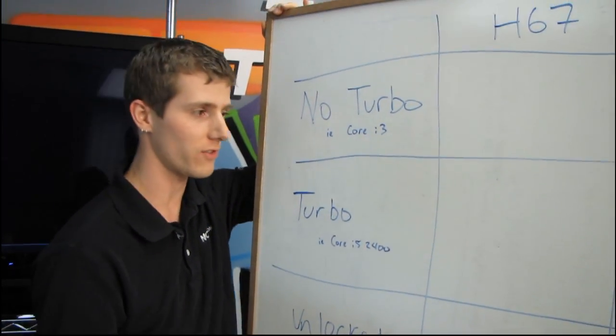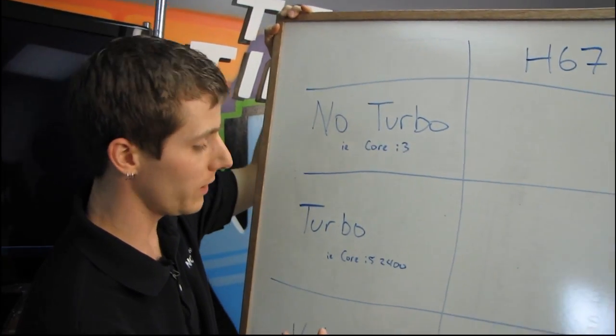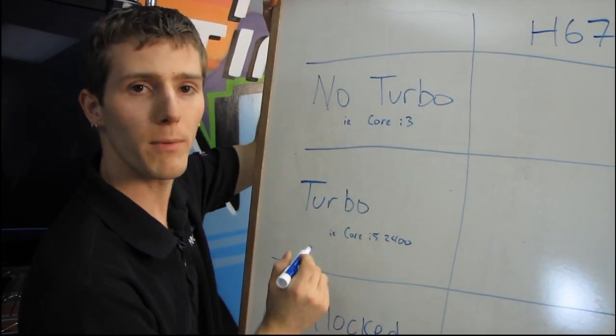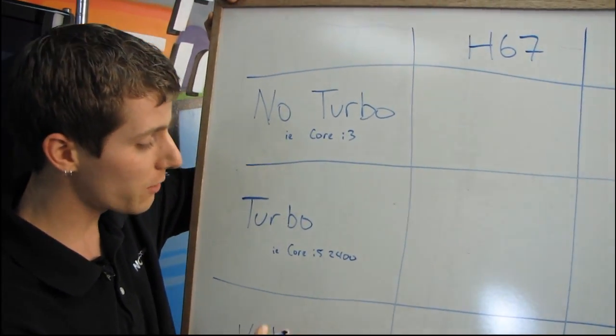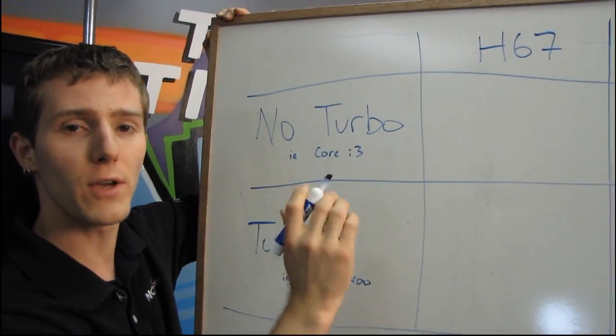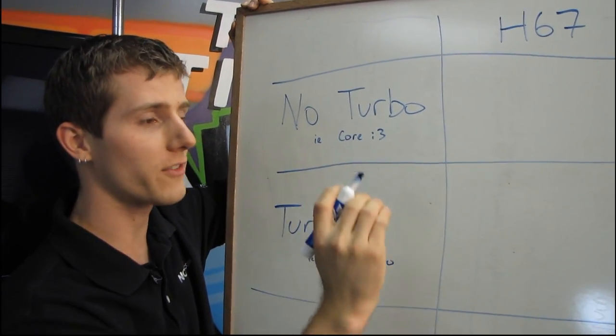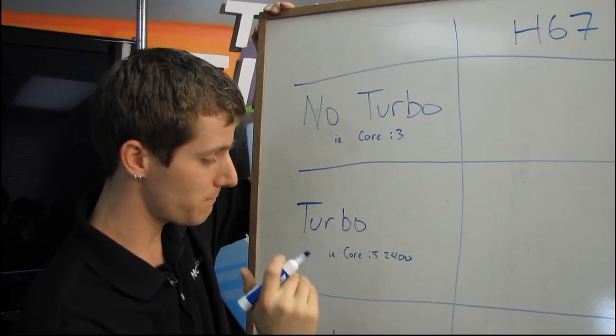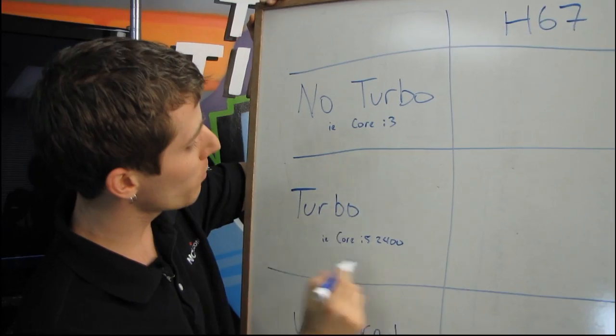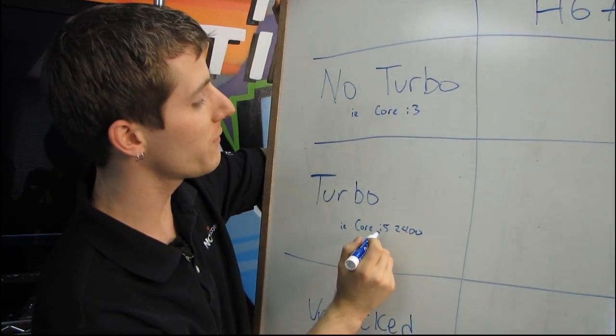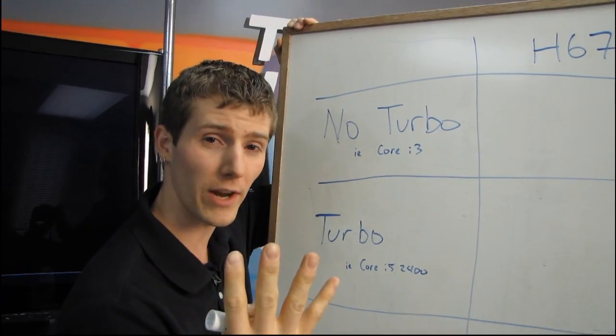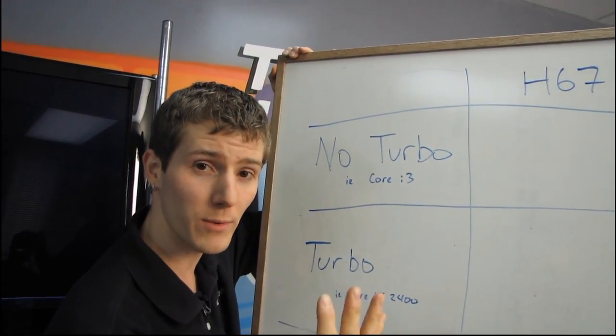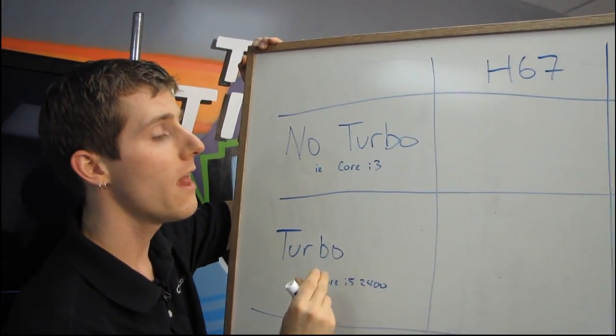So let's start with Intel Turbo. Turbo, as we're familiar with already from the Core i7 original processor, allows the chip to overclock itself if you have enough cooling and you're not overstepping the thermal design power. Turbo processors such as the Core i5-2400 are allowed to turbo themselves up to 4 speed grades above their stock frequency if you're using only one core.